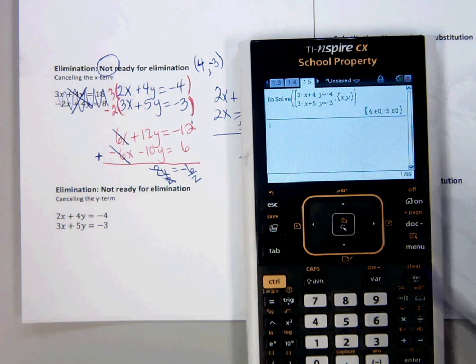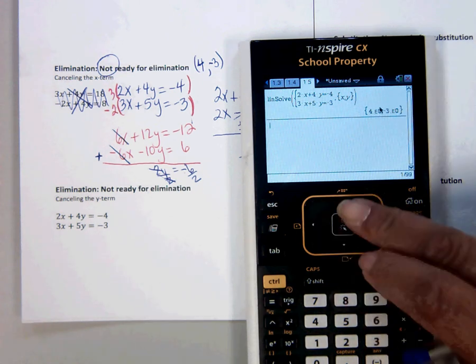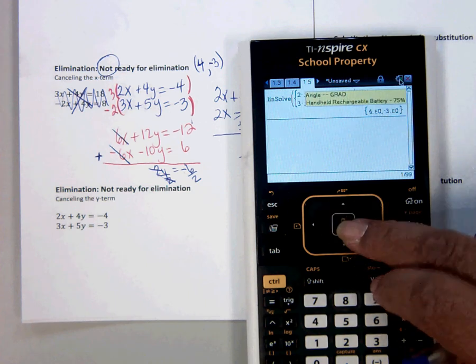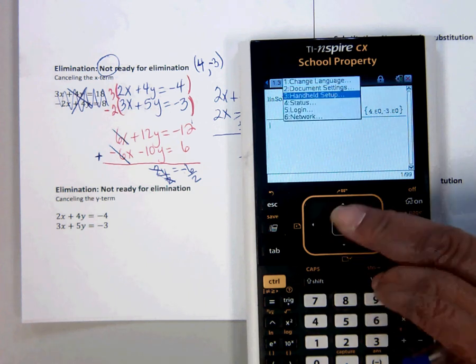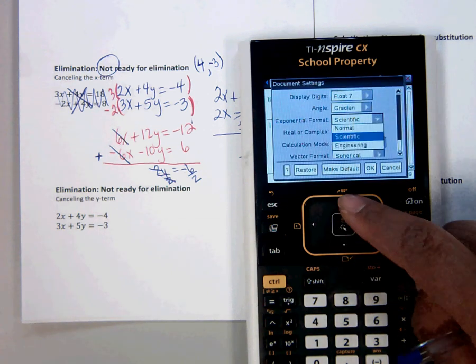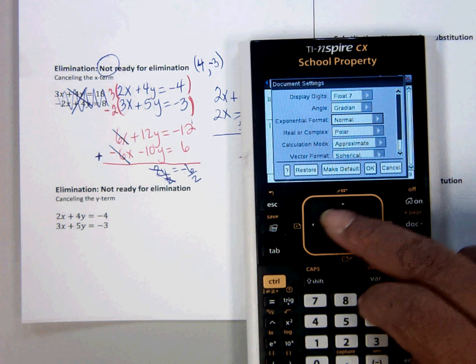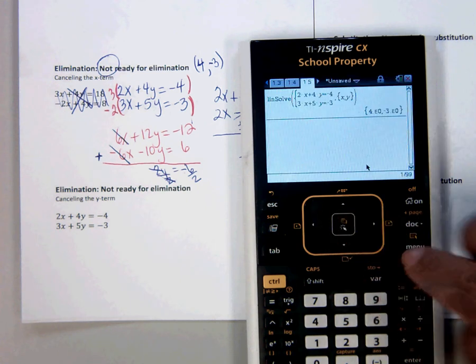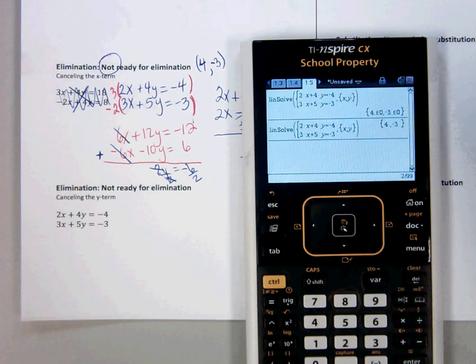I don't like the way this calculator is giving me an answer. So, I'm going to change the settings on it real quick. Not that you would know how to do this, but document settings. Let's make this normal. And press ok because I don't want to start this video over. Press enter again. Alright, there we go.